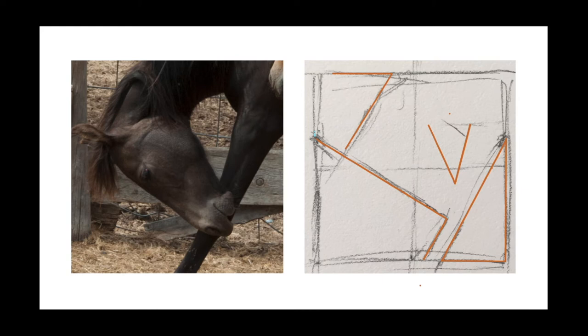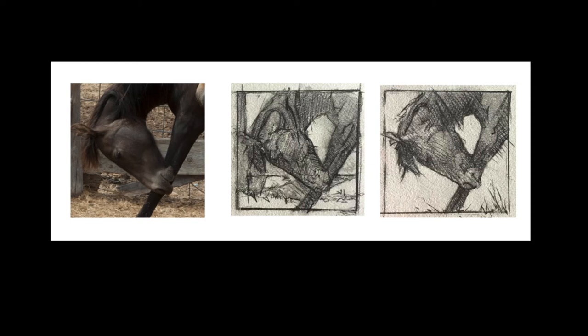I wanted to skip ahead to where I had completed two sketches, because it addresses my second most important decision for this composition. I wanted to figure out how much of the background from the photo was necessary to communicate that idea of squares and triangles.